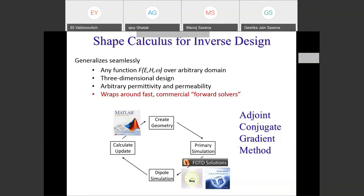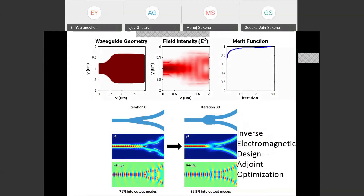In your calculus course you learned that to optimize a function you can take the derivative — when you reach the peak of a function, the derivative is zero with respect to the design variables. But to determine a shape, there are many many degrees of freedom to adjust simultaneously. For example, designing a waveguide splitter where one waveguide comes in and two come out with as little excess loss as possible.